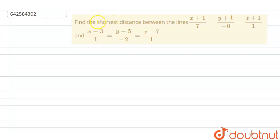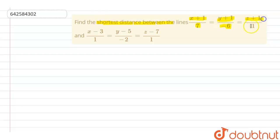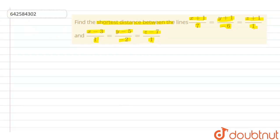The question is: find the shortest distance between the lines given as (x+1)/7 = (y+1)/(-6) = (z+1)/1 and the other line whose equation is (x-3)/1 = (y-5)/(-2) = (z-7)/1.